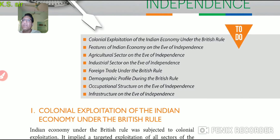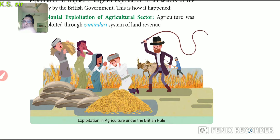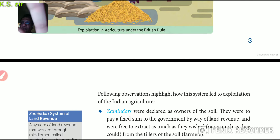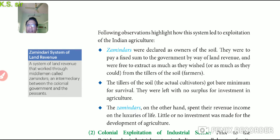Here is a picture showing who the Zamindar is — the Zamindar is shown with a hunter, and the tailor is on the other side. The picture is enough to describe the condition. Now starting with the points: following observations highlight how the system led to the exploitation of Indian agriculture. First of all, the Zamindar was declared as the owner of the soil.